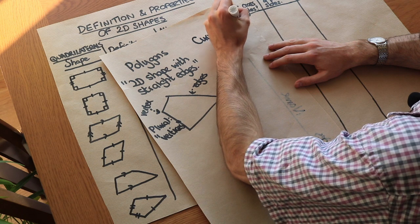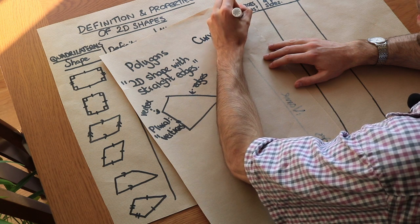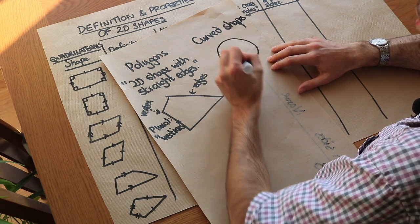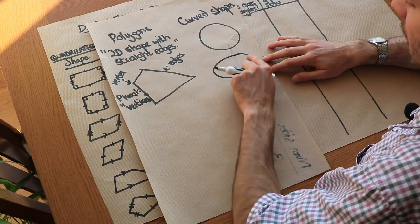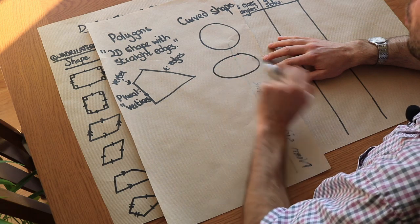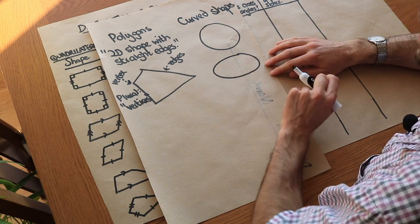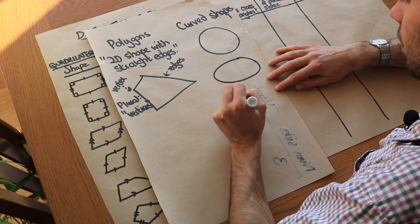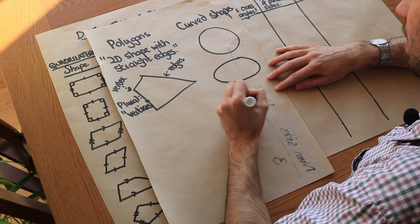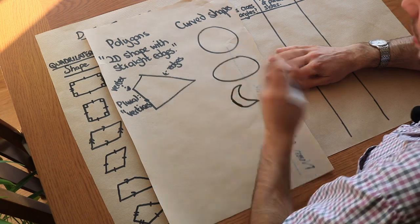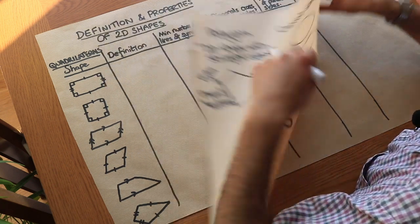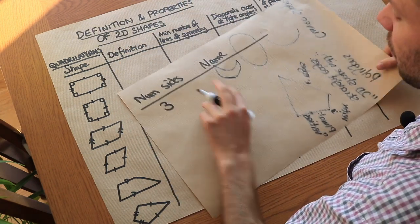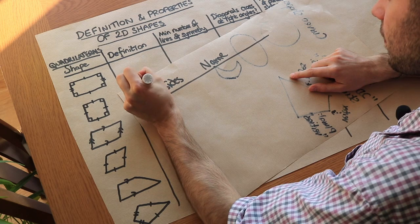A polygon is just a 2D shape with straight edges. We also have other curved shapes, such as a circle, an oval — the mathematical name for that is an ellipse — or a crescent shape.